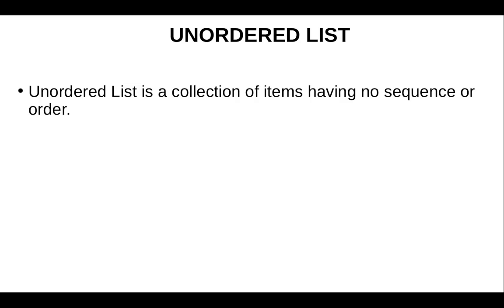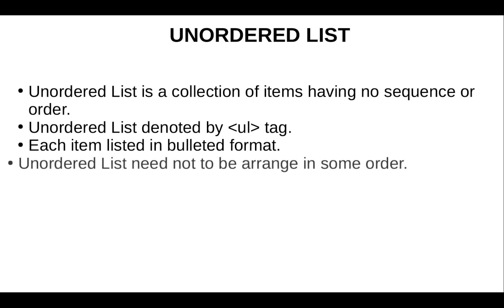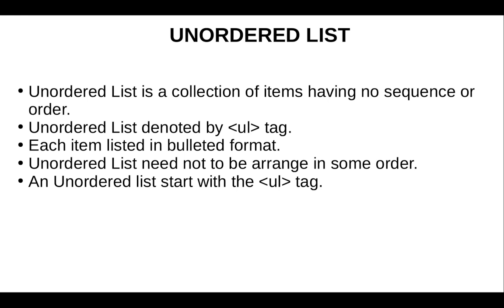The next topic is unordered list. An unordered list is a collection of items having no sequence or order. It is denoted by the ul tag. Each item is listed in bullet format. Unordered lists need not be arranged in any order. An unordered list starts with the ul tag and list items start with the li tag.